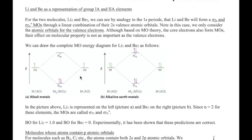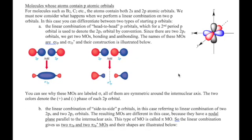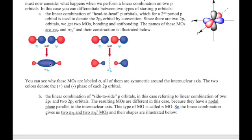The more complex situation comes about when we have 2p atomic orbitals, where different types of MOs can form. Each p orbital has two lobes with opposite phases, usually shown by different colors. One type of MO is formed by a linear combination of head-to-head p orbitals — the px orbital. Just like with s orbitals, we can imagine this as wave addition, both in-phase and out-of-phase. The in-phase addition gives the bonding MO called sigma 2p, and the out-of-phase addition gives the antibonding MO called sigma 2p*.